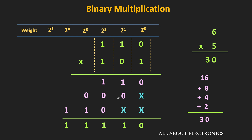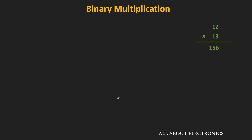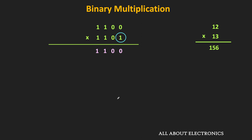Let's take one more example. We want to multiply 12 and 13. In decimal, this result should be equal to 156. In binary, 12 corresponds to 1100 and 13 corresponds to 1101. First, let's start with the LSB of the multiplier, which is equal to 1. Since this digit is equal to 1, the partial product will be same as the multiplicand — that is equal to 1100.